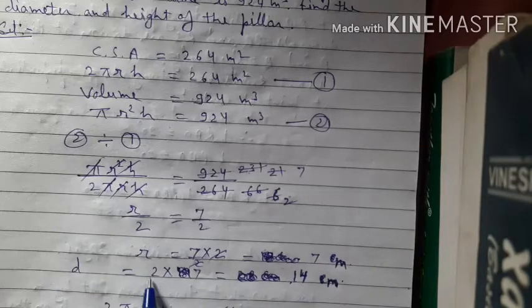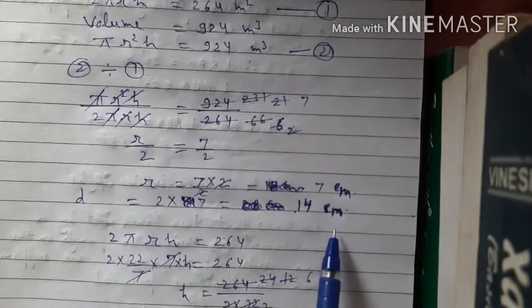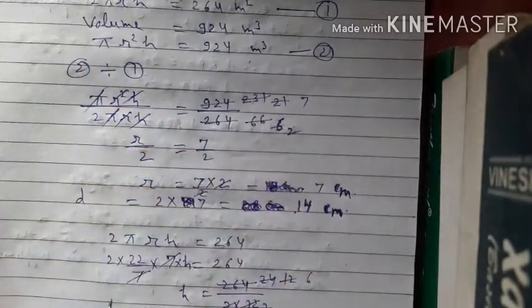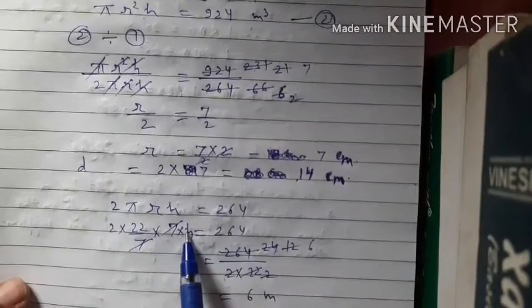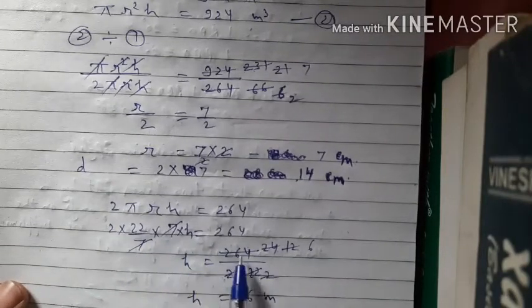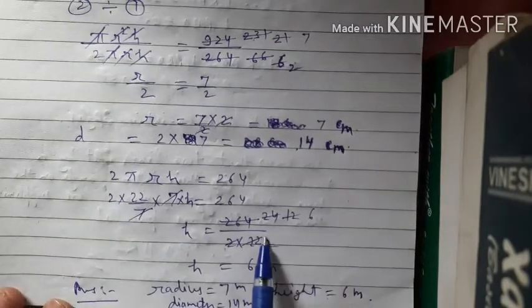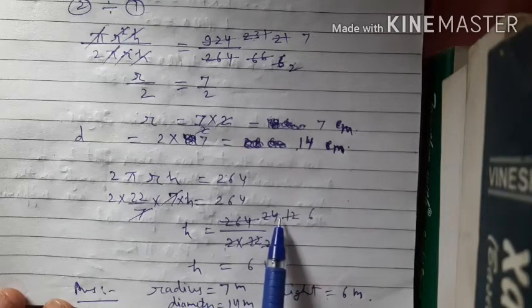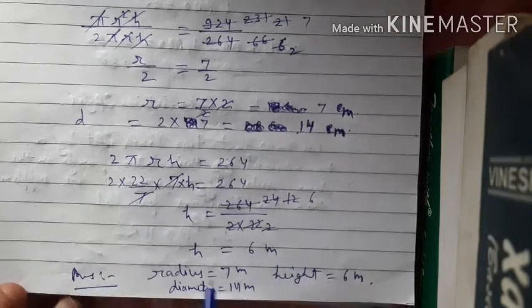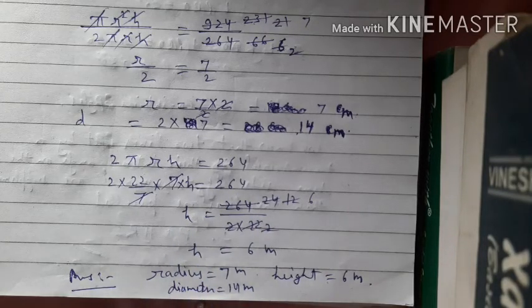Radius = 7 m, so diameter = 2 × 7 = 14 m. Substituting r = 7 into Equation 1: 2 × (22/7) × 7 × h = 264. The 7s cancel: 2 × 22 × h = 264, so 44h = 264, h = 264/44 = 6 m. Height = 6 m, diameter = 14 m. This is a very important question — practice it repeatedly.